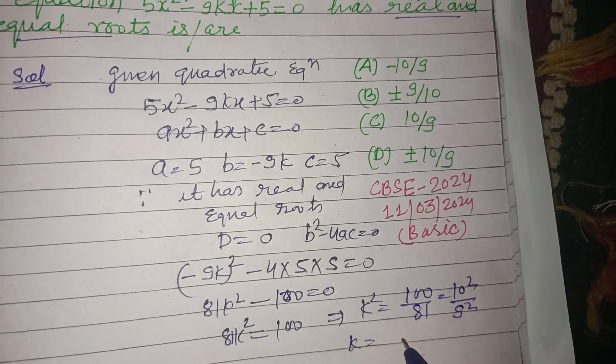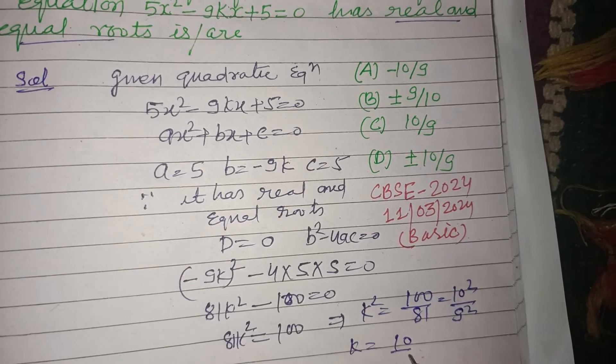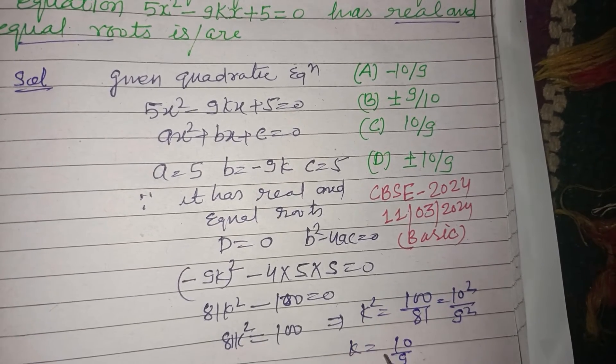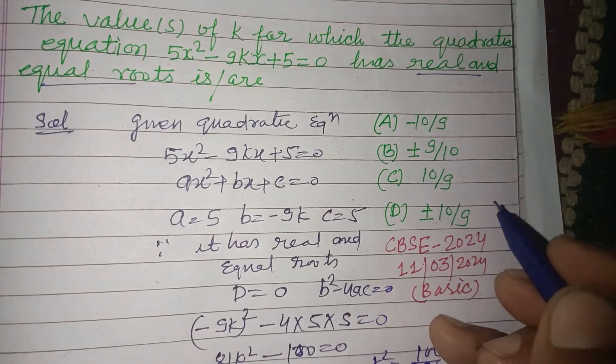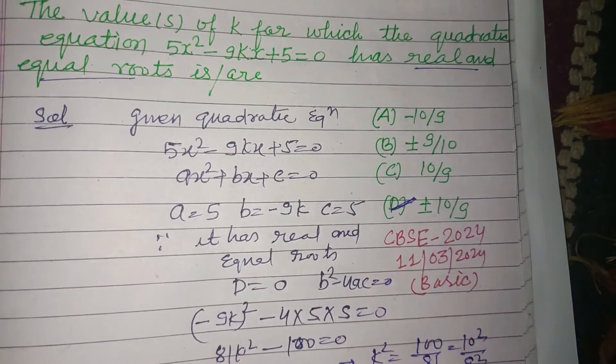So k = ±10/9. Plus minus 10/9 is the correct answer which is found in option D. Therefore option D is correct.